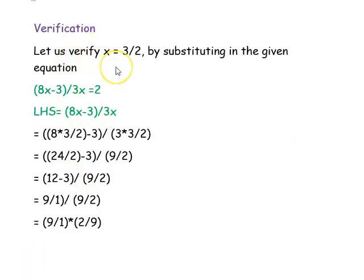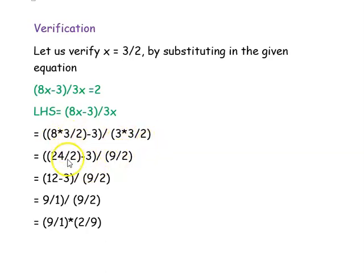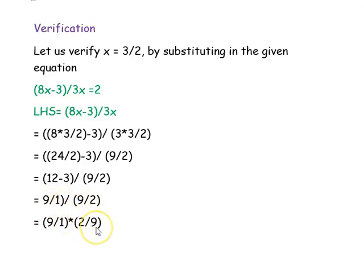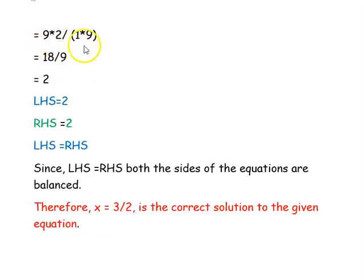Now we verify by substituting x = 3/2 in the given equation (8x − 3)/(3x) = 2. Left-hand side: (8 × 3/2 − 3)/(3 × 3/2) = (24/2 − 3)/(9/2) = (12 − 3)/(9/2) = 9/(9/2). Converting division to multiplication: 9 × 2/9 = 18/9 = 2.